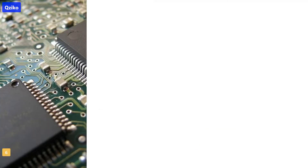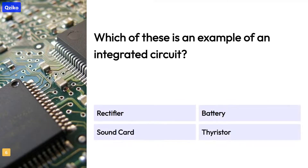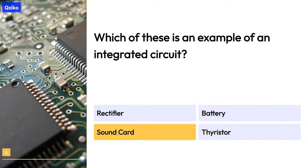Quiz number six: which of these is an example of an integrated circuit? The right answer is sound card.